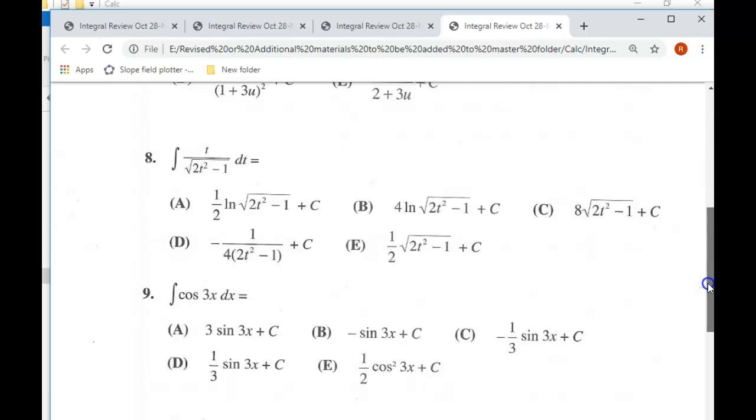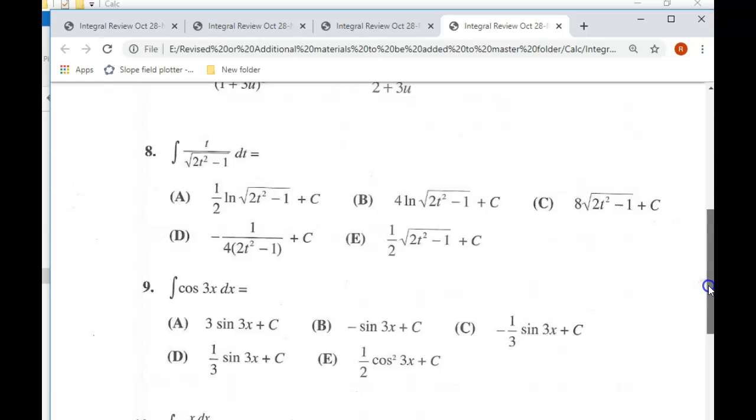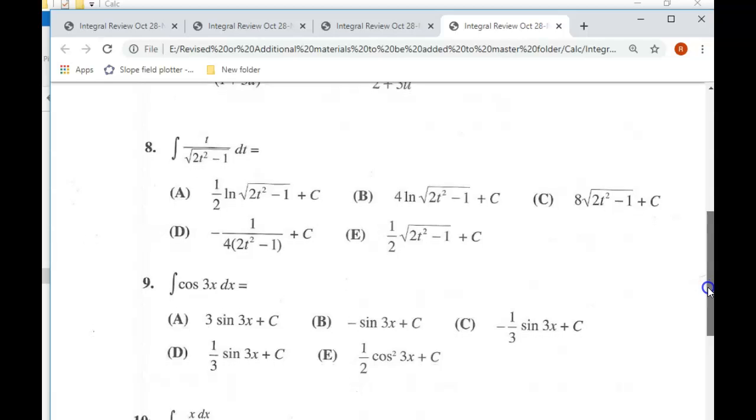Let's compare, let's take a look at, let's see. Number 8, that's another basic u sub problem. In that case, your denominator, 2t squared minus 1 would be the u.